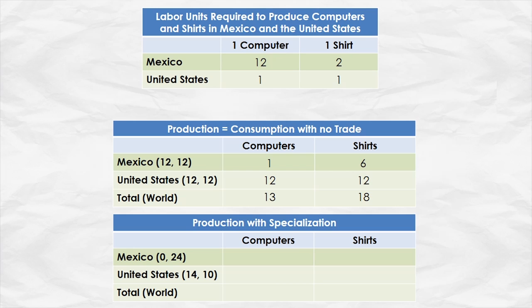Now let's suppose that Mexico specializes — puts all 24 units of labor into shirt production, zero into computer production. How many shirts and computers now? Clearly zero computers. With 24 units of labor and two units of labor per shirt, you get 12 shirts in total. Meanwhile, the United States now devotes 14 units of labor to computers and 10 to shirts.